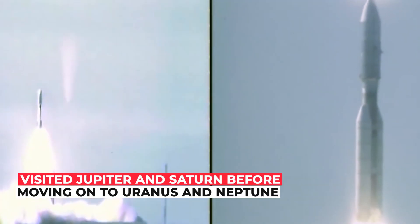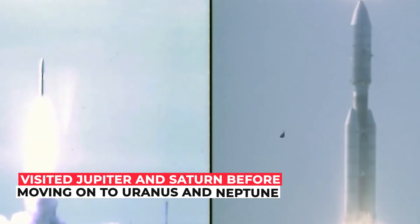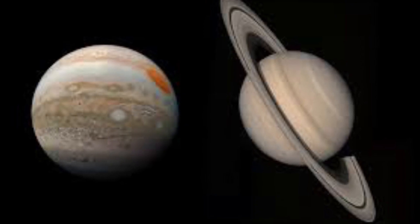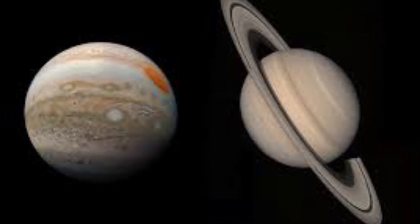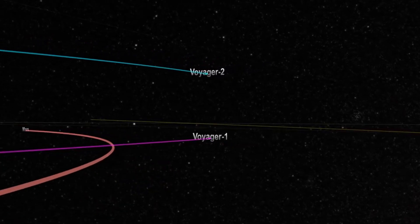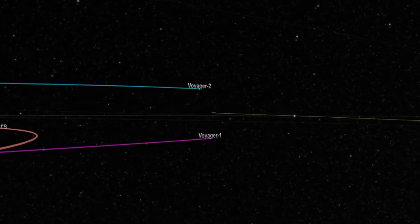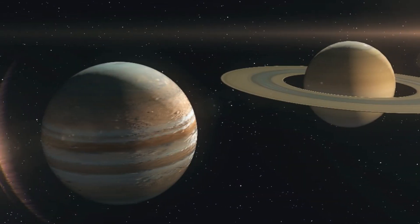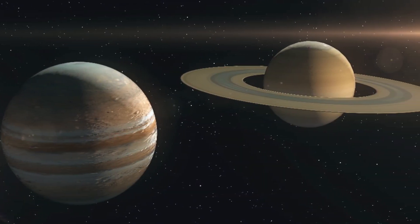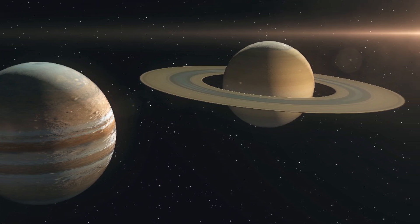The mission was to explore Jupiter and Saturn, as well as the planets beyond our solar system. The spacecraft is now descending beneath the ecliptic plane at a rate of about 470 million kilometers or 290 million miles per year. Their mission was to explore Jupiter and Saturn, as well as the planets beyond our solar system.